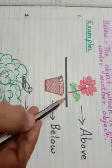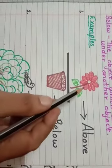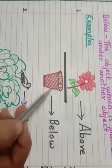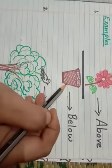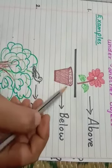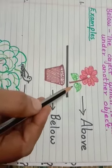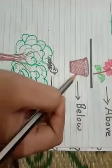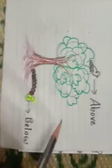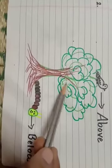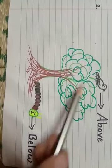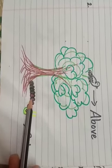Now, this is the line. Above the line, flower is there. And below the line, pot is there. So, we can say that above the line, flower. Below the line, pot. Same way, here also. Tree. Above the tree, bird is sitting. And below the tree, caterpillar is there.